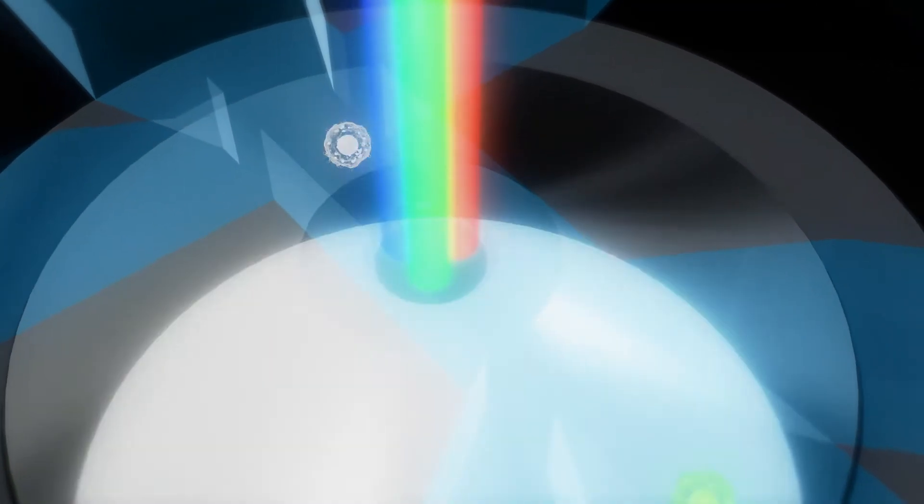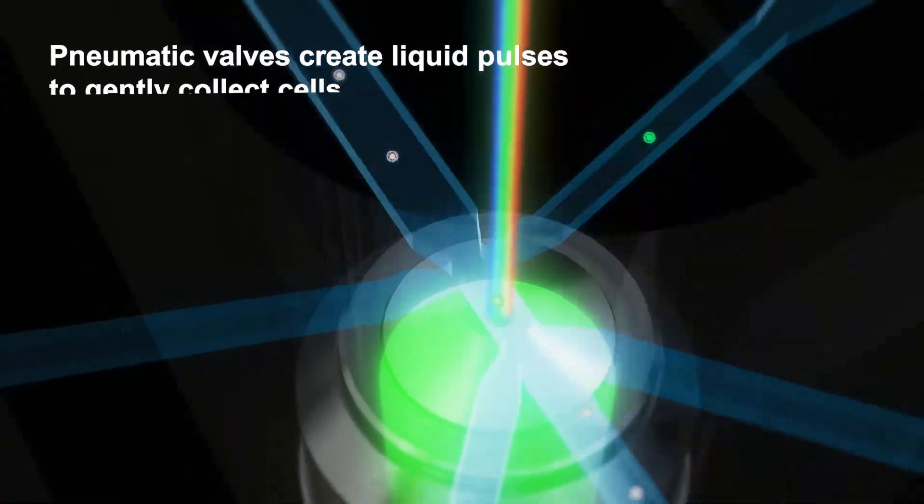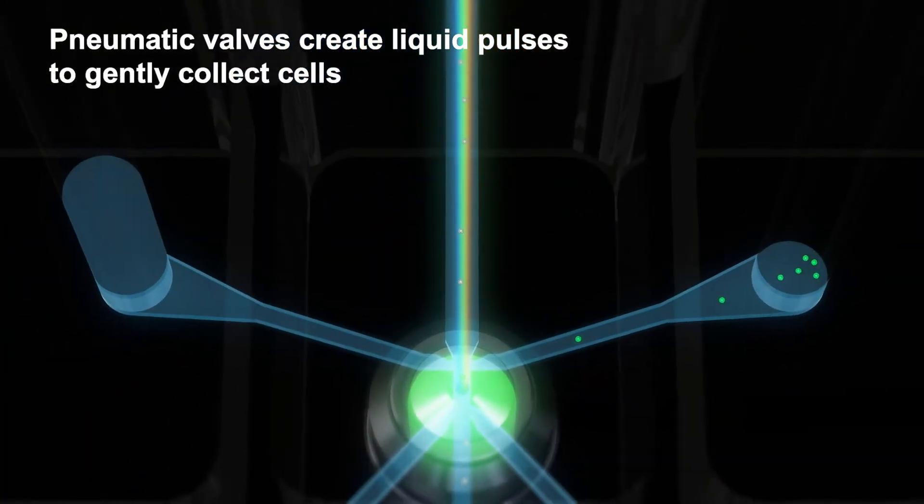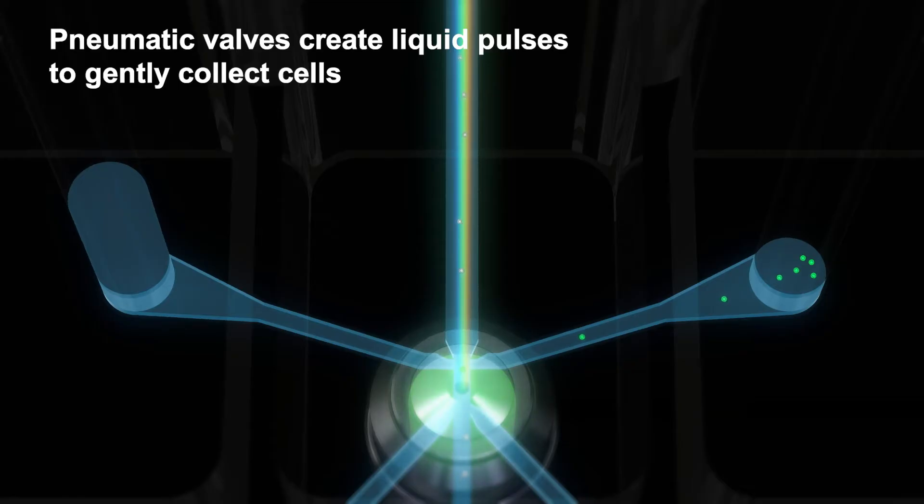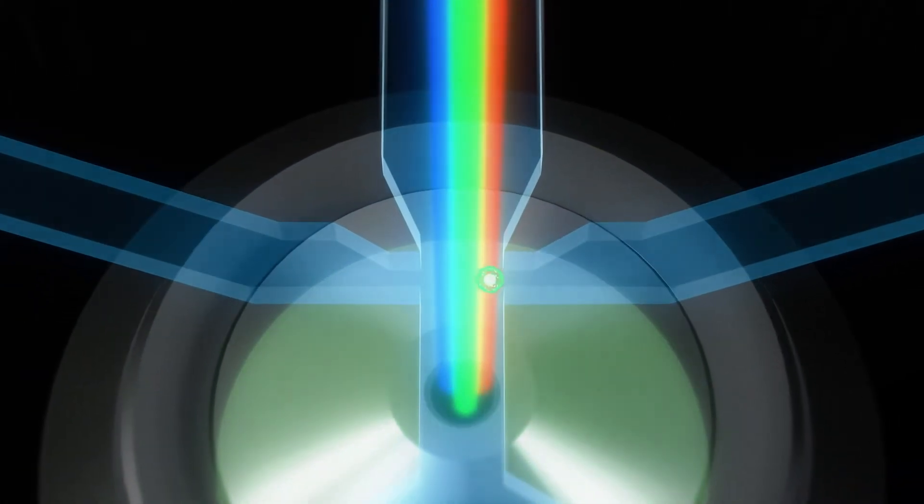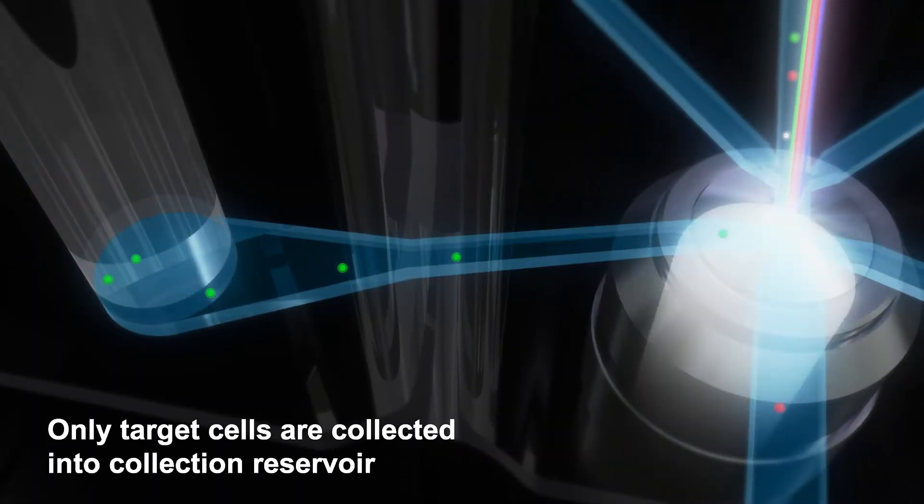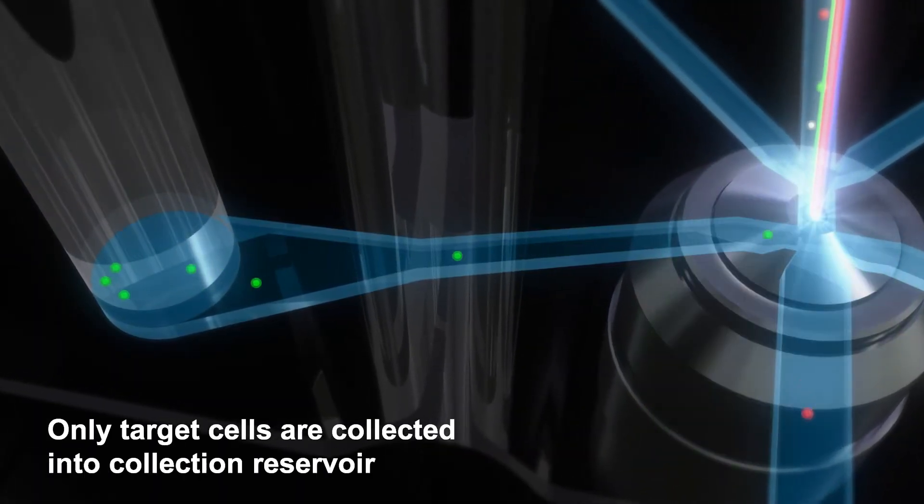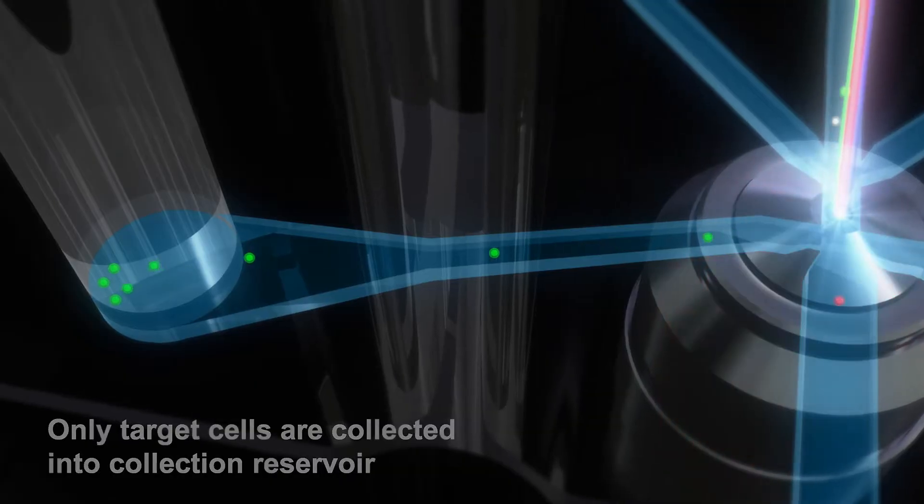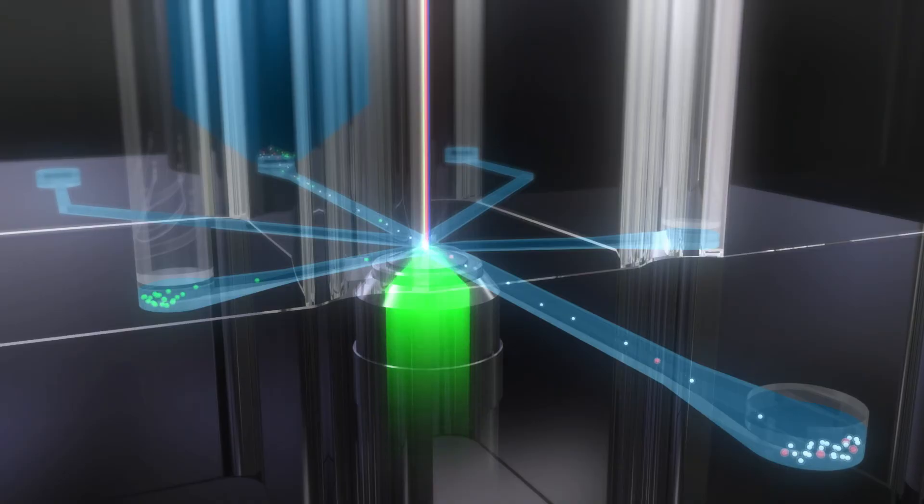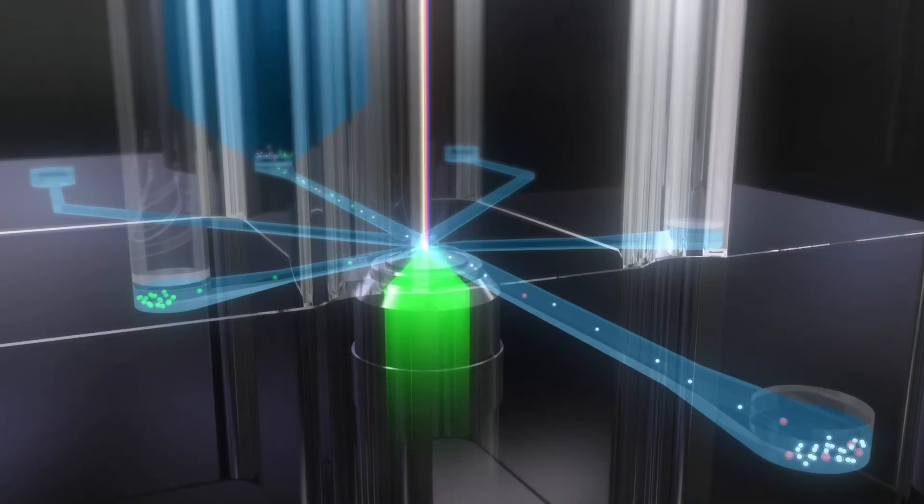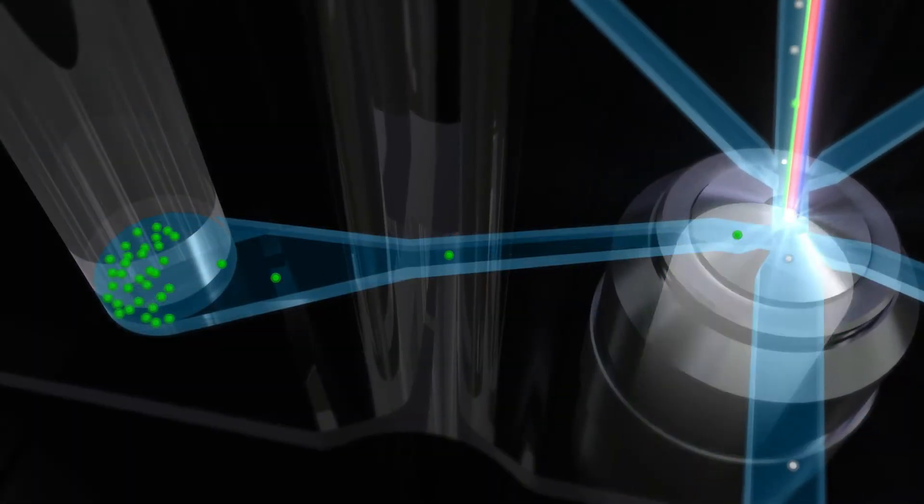When a target cell is detected, the pneumatic valves open and close momentarily to generate a liquid pulse that pushes the target cell into the collection reservoir together with the surrounding liquid. This process is repeated at a high rate of up to 1,000 times per second.